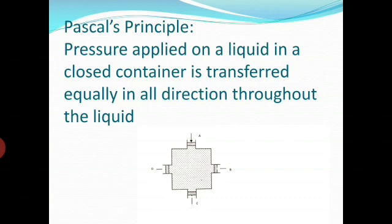Looking toward the example — the figure on your screen — you can see there is a closed container. Four openings are there: A, B, C, and D. And at the end of each opening, there is a movable piston. Movable piston means that the pistons can move backward and forward easily. And inside that container, some fluid is there.